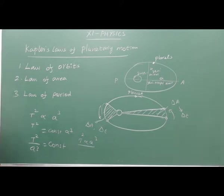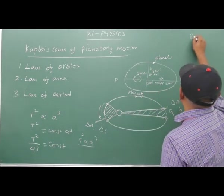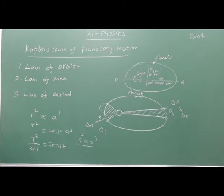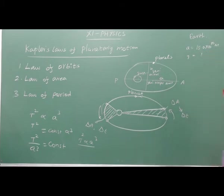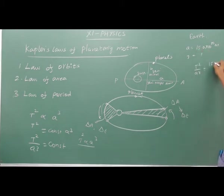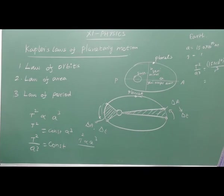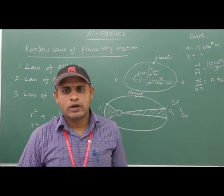For example, for Earth: A is equal to 15.0 × 10¹⁰ meters, and T is 1 year. If we find T²/A³, that is 1² divided by (15.0 × 10¹⁰)³, we get T²/A³ is equal to 2.96.